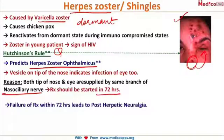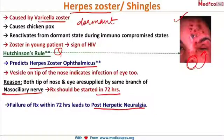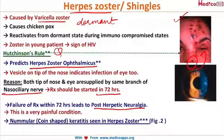Treatment must be started within 72 hours of diagnosis. Failure to do so leads to post-herpetic neuralgia, a very excruciating pain that occurs usually one to two months after the disease subsides.